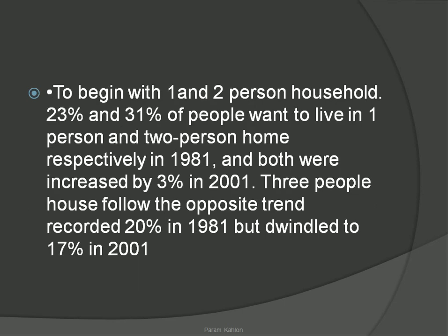To begin with, 1 and 2 person households: 23 percent and 31 percent of people lived in 1 and 2 person houses respectively in 1981. Both were increased by 3 percent in 2001, recording 26 percent and 34 percent.